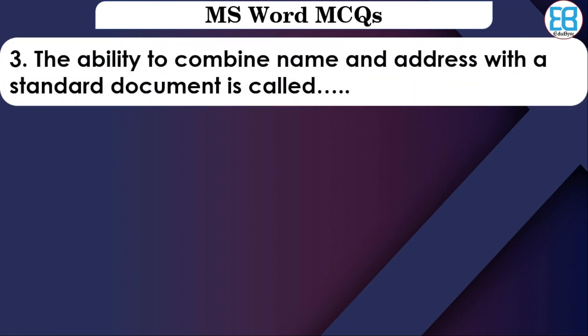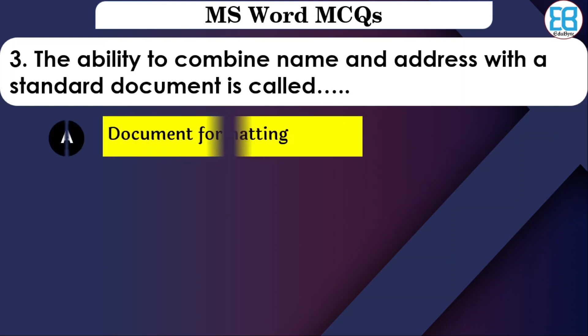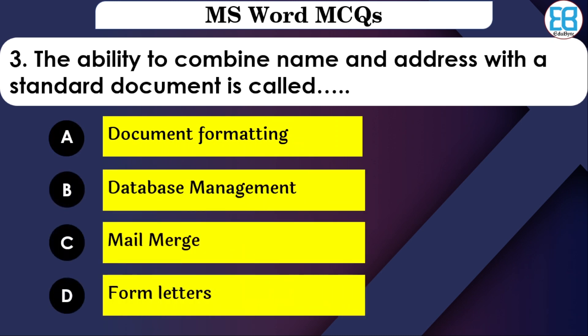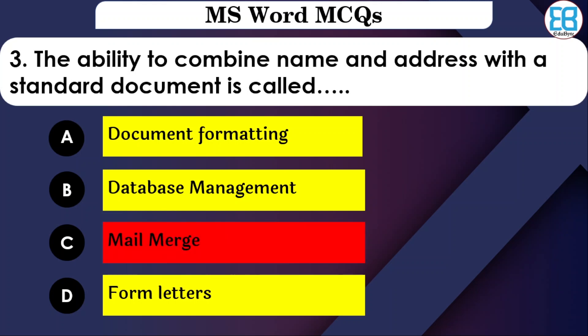The ability to combine name and address with a standard document is called what? The options are: Database Management, Mail Merge, or Form Letters. The correct option is Mail Merge — you combine the name and address with a standard document using Mail Merge.